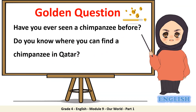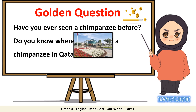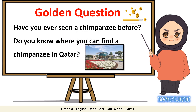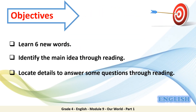It's golden question time. Have you ever seen a chimpanzee before? Do you know where you can find a chimpanzee in Qatar? In Al-Khor Park. You have completed your first objective — you have learned 6 new words. Now it's time to move to the second one: identify the main idea through reading.